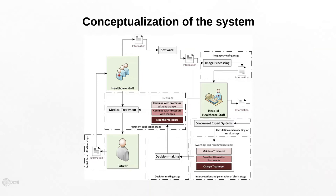This information is then evaluated by an expert — the head of the healthcare staff — taking into account the patient's history and any other relevant information. This information is sent to a concurrent expert system that provides recommendations: maintain the treatment, consider an alternative treatment, or change the treatment. The expert evaluates these recommendations and decides on the course of action, and those instructions are sent to the healthcare staff who apply the medical treatment or instructions to the patient.